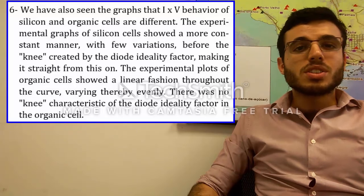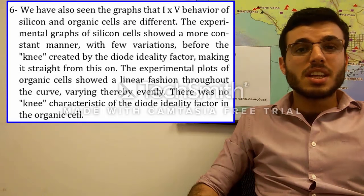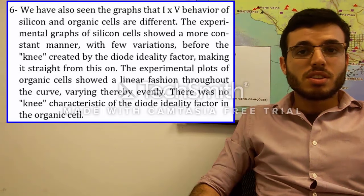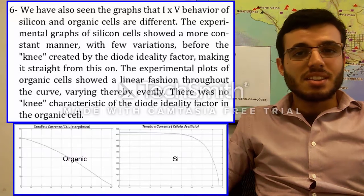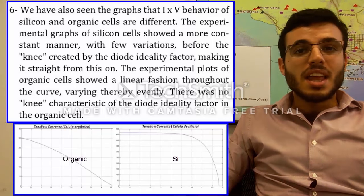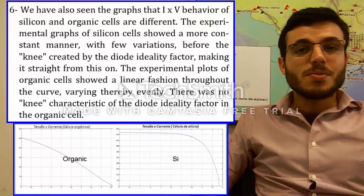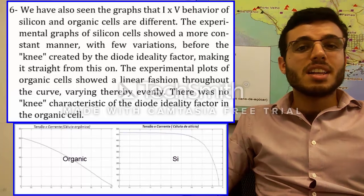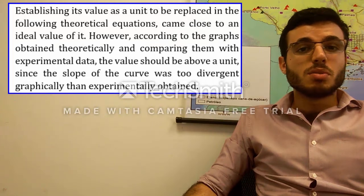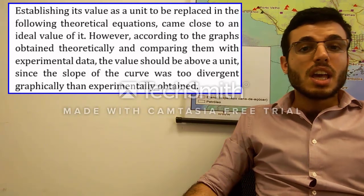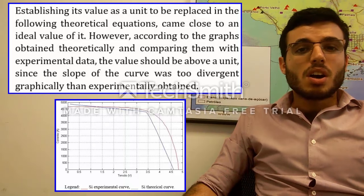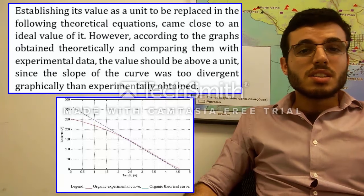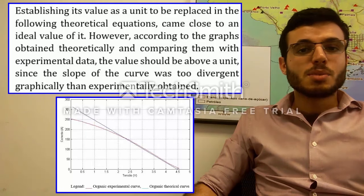Sixth: the current versus voltage behavior of silicon and organic cells are different. The experimental graphs of silicon cells showed a more constant manner with few variations before the knee created by the diode ideality factor, making it straight from that point on. The experimental plots of organic cells showed a linear fashion throughout the curve, varying evenly. There were no strong characteristics of the diode ideality factor in the organic cell. Establishing its value as a unit in the theoretical equations came close to an ideal value; however, according to the theoretically obtained graphs compared to experimental data, the value should be above unity, since the slope of the curve was too divergent graphically versus experimentally.